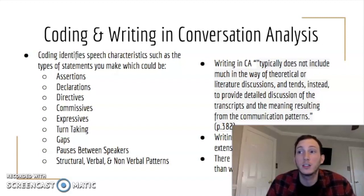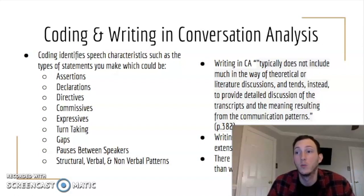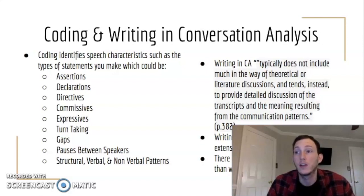Conversation analysis uses an inductive process where you work back and forth between the transcript and the analysis you are conducting, which involves three important steps. One, identify sequences of related talk. Two, examine how the speakers take on certain roles or identities. And three, look for outcomes of the talk and work backwards to find out how the outcome was produced.